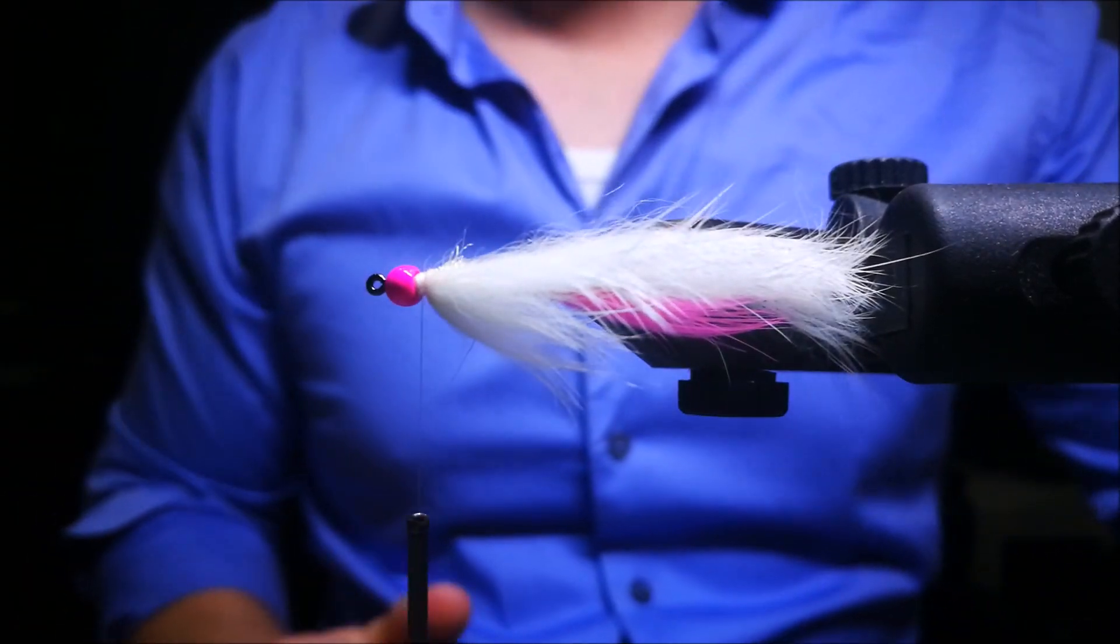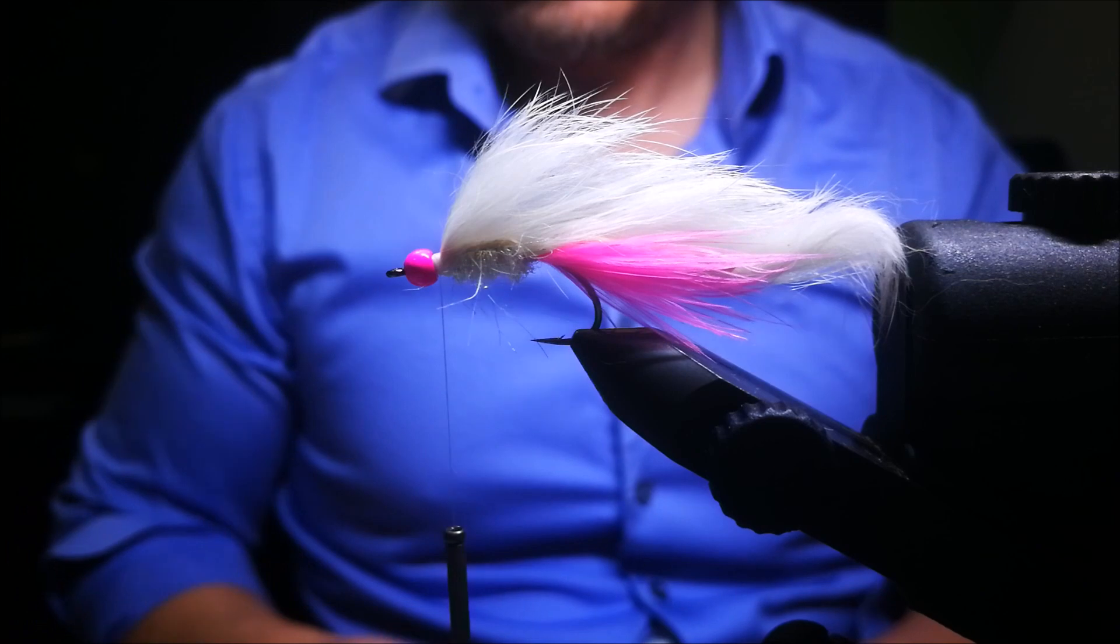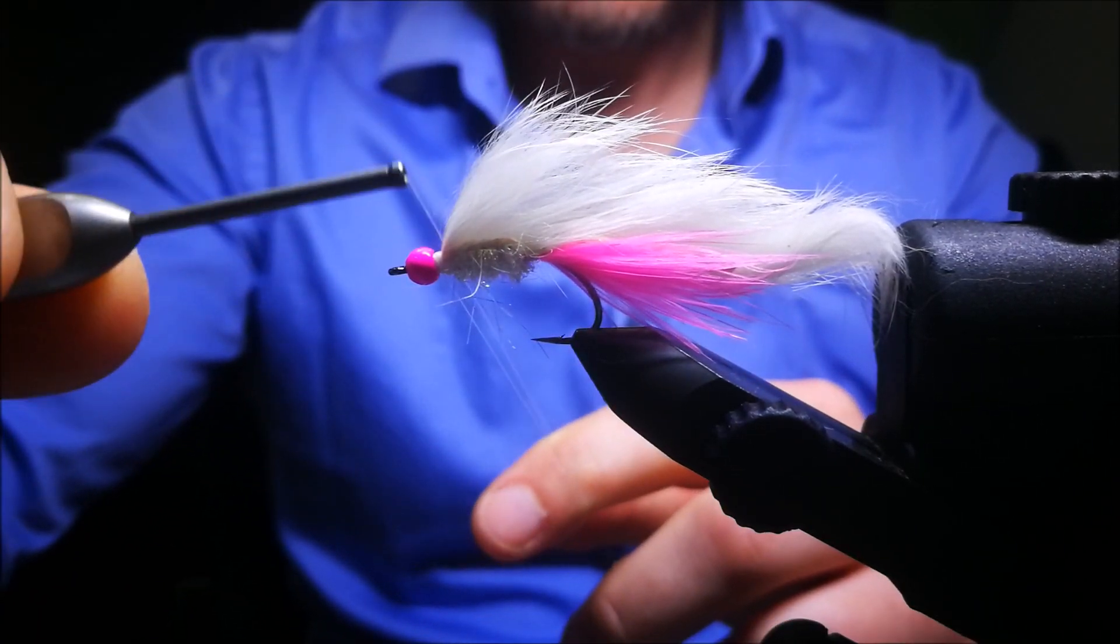Make sure you close the dubbing loop by wrapping the bobbin around the loop two times and then tie it down again.